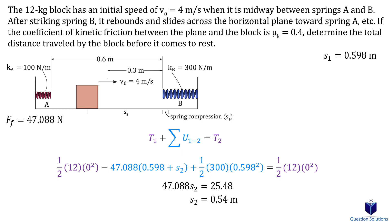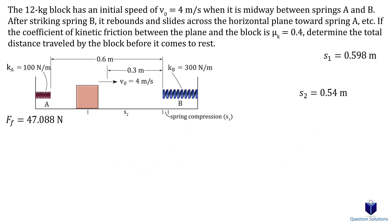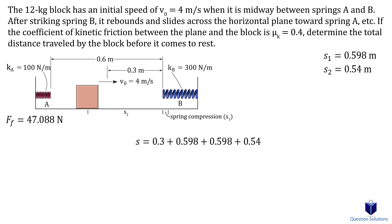Solving for s gives us the distance the block travels before stopping. Since that's less than 0.6 meters, the block doesn't hit spring A, so no further calculations are needed. Adding up the total distance: the initial 0.3 meters, plus the spring compression, plus the spring extension, plus the final distance traveled before stopping — the block traveled 2.036 meters in total.